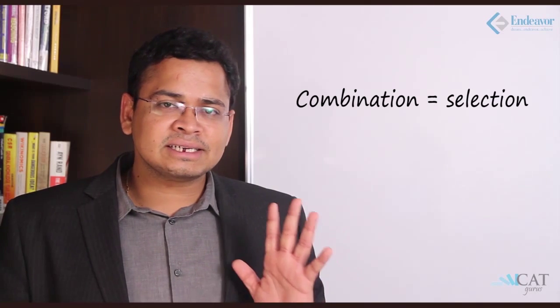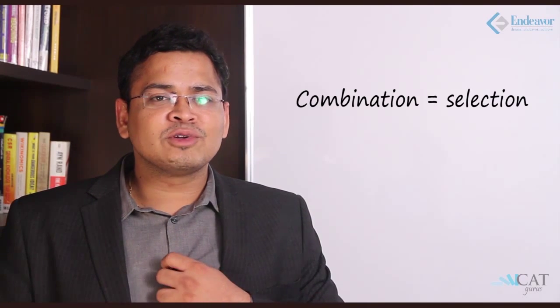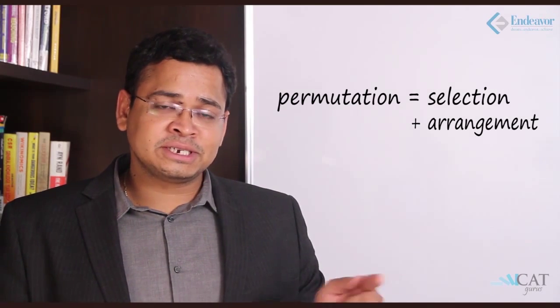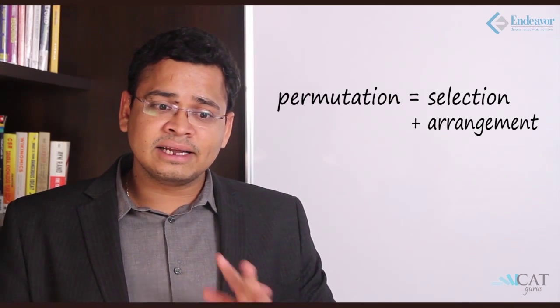So if the two markers are distinct, we apply P — that is permutation. If both items are the same, we apply C — which is combination. In mature jargon: combination is nothing but selection — you do not care about the arrangement. On the other hand, permutation is first selection and then arrangement.